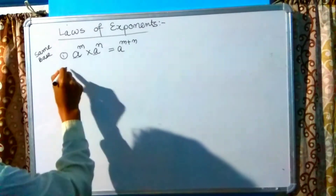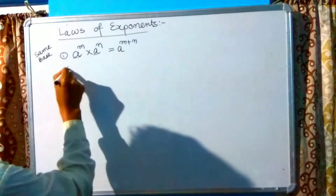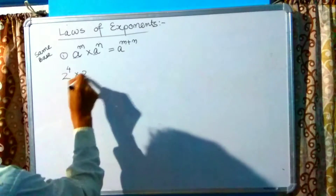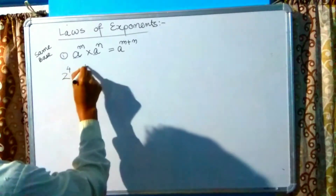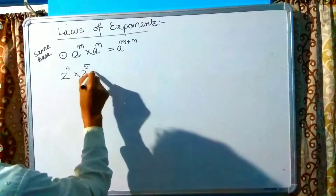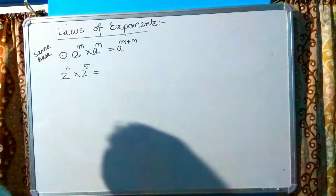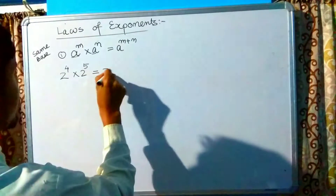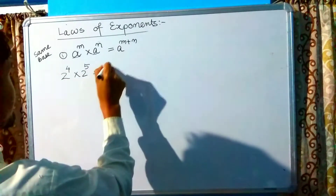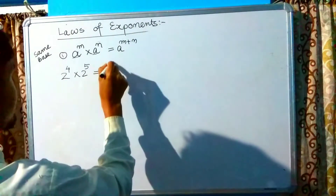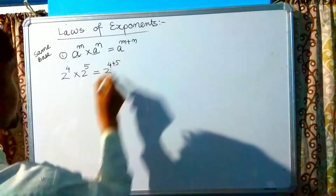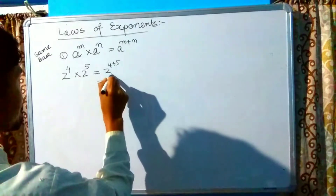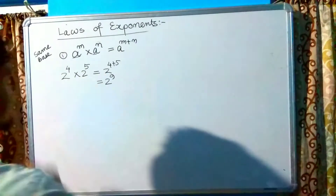Law 1 — Multiplication of same base: when we multiply expressions with the same base, we add the powers. For example, 2 raised to the power 4 multiplied by 2 raised to the power 5 equals 2 raised to the power 4 plus 5, which is 2 raised to the power 9.